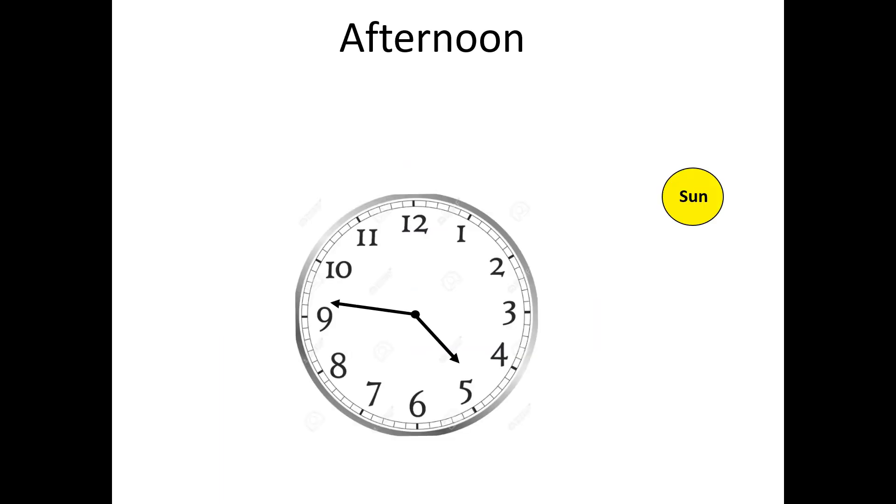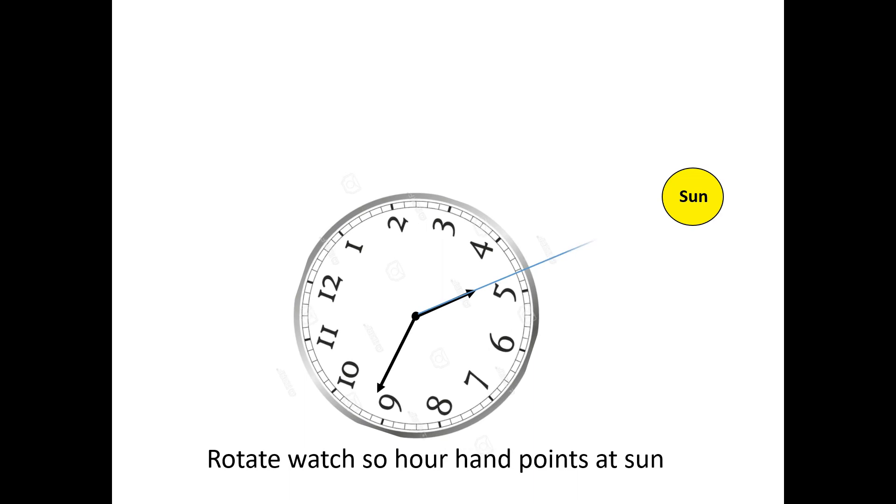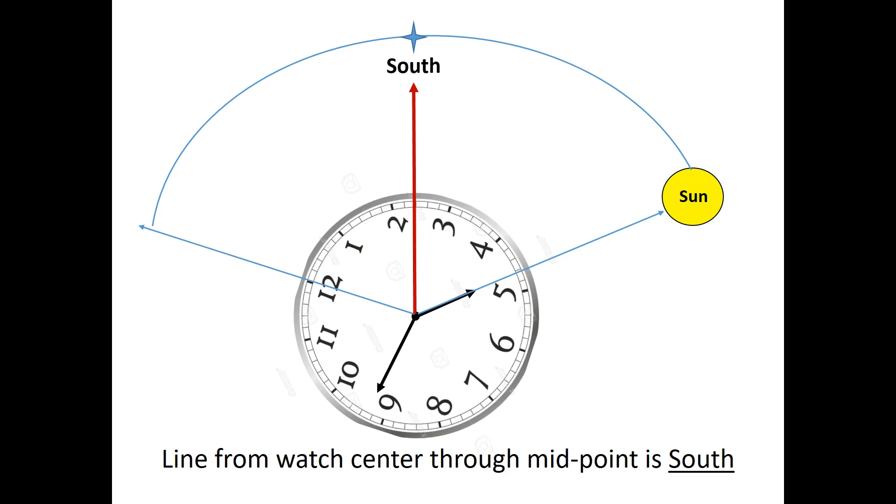AM or PM makes no difference. Here's an example from late afternoon. Once again, you rotate the watch so the hour hand points at the sun. Then, you imagine a line running through the 12. Next, you estimate the midpoint between the hour hand and the 12. And then, you imagine a line running from the watch center through that midpoint, and that line is pointing approximately south.